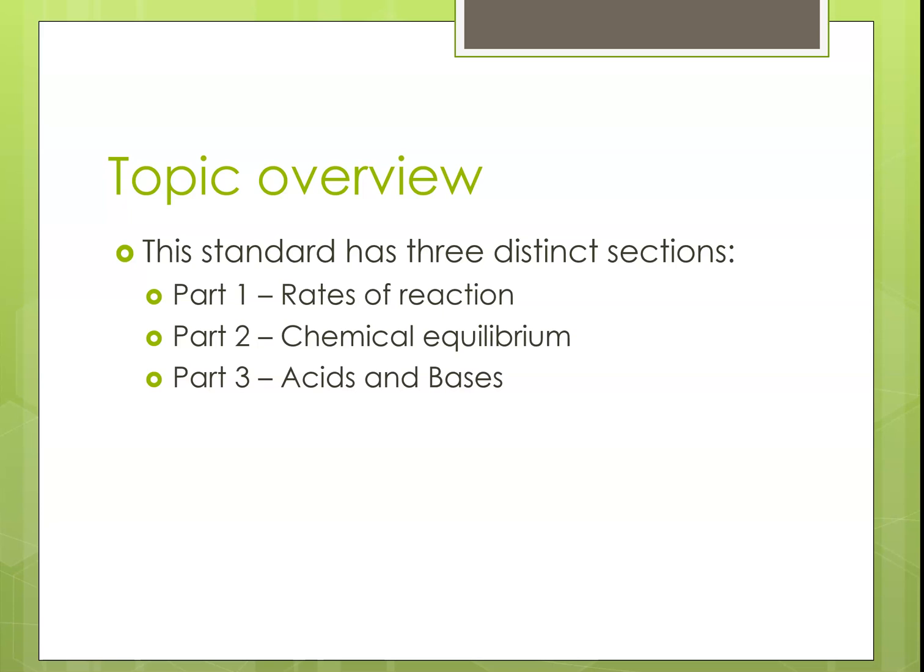The second part is on chemical equilibrium — what is an equilibrium reaction, how do we know when we've got equilibrium using equilibrium constants and things like that. The last section is some basic stuff on acids and bases, but more than what you will have done in level 1. This is looking at calculating pH and discussing strong and weak acids and bases in terms of their dissociation reaction with water. It probably won't make any sense right now but by the time you finish this topic I hope it will.